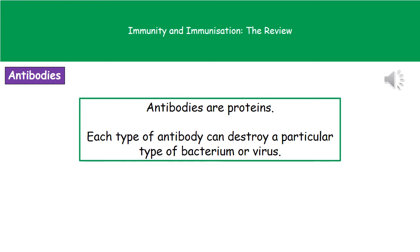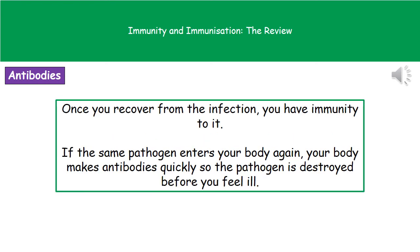An antibody is a protein that is specific to one particular bacteria or one particular virus. You have different antibodies for each of the different bacteria or viruses that you encounter in your life. Once you've recovered from an infection you have immunity to it, so if that exact same pathogen entered your body again, your body would be able to make the antibodies very quickly, meaning the pathogen would be destroyed before you feel ill.